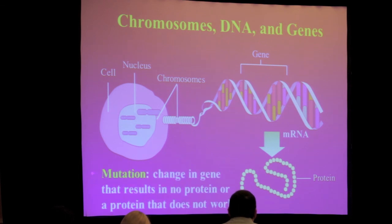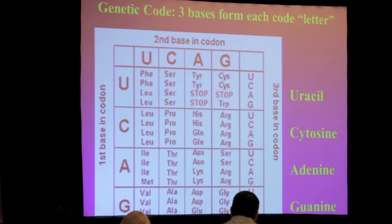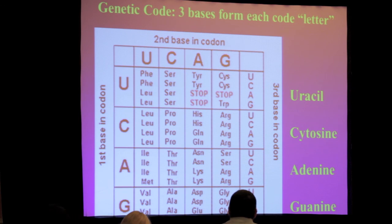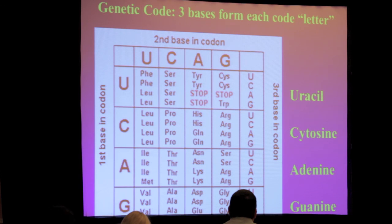A mutation is a change in a gene that results in either no effective protein or a protein that just doesn't really work. To make these proteins, we have what's called the genetic code. Three bases form a codon — we have adenine, cytosine, guanine, and then uracil, which is slightly different.